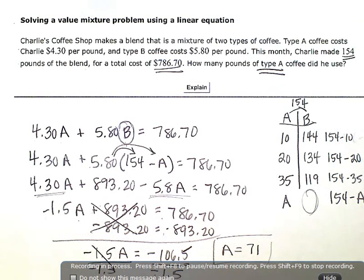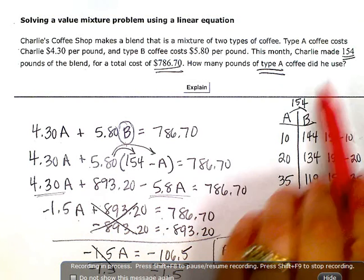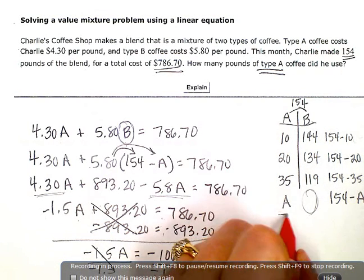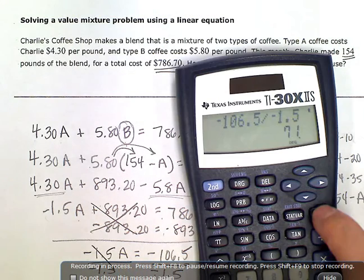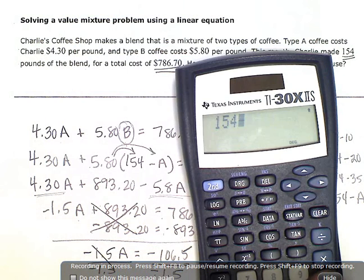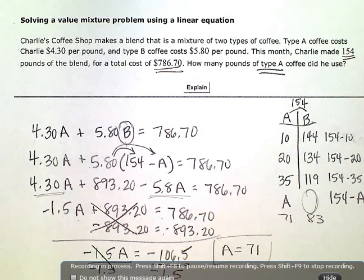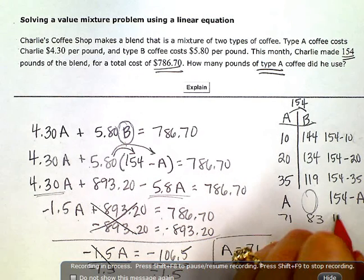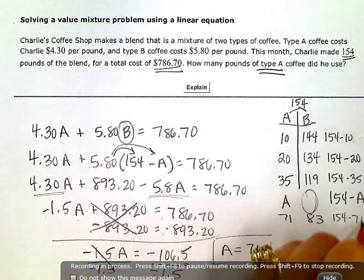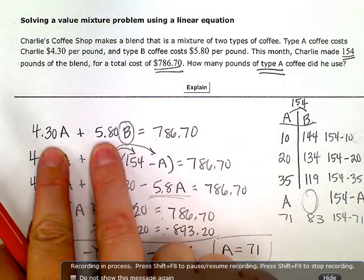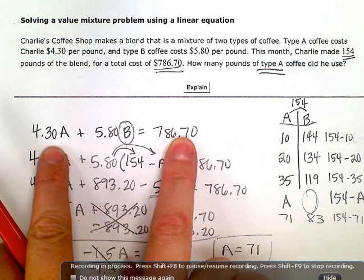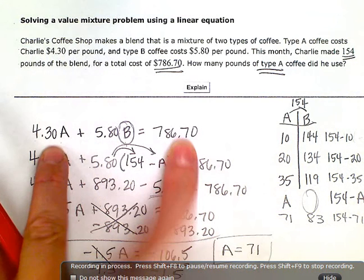Which means that if I did the 154 over here, right? If there was 71 pounds of A, then that means there were 83 pounds of coffee B. Because I had to do the 154 minus the 71. And if I put these numbers in at these prices and check it, then I'll see it actually does total $786.70.